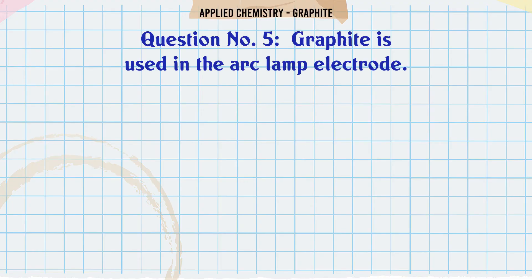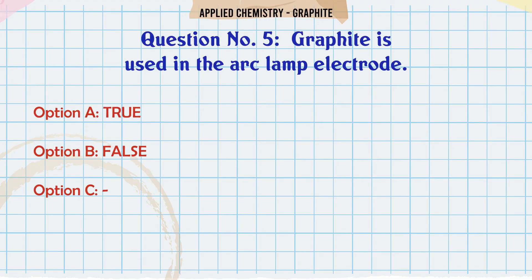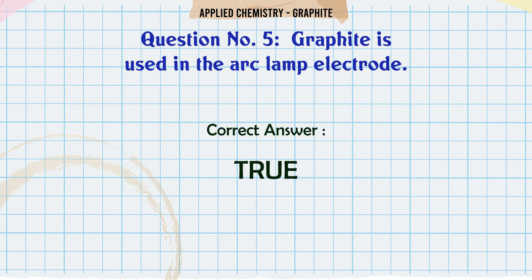Graphite is used in the arc lamp electrode. A. True. B. False. The correct answer is True.